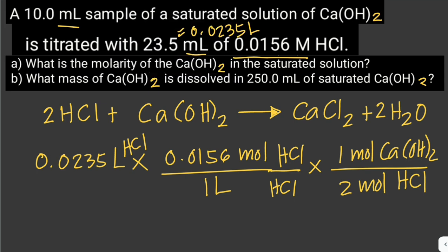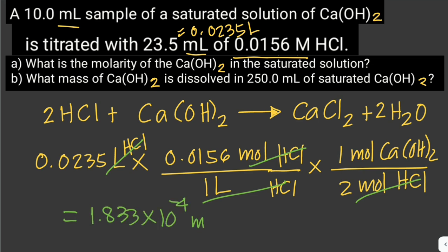We cancel out the units — the liters and the moles of HCl cancel out. Now we can solve for the number of moles of calcium hydroxide: 0.0235 times 0.0156 divided by 2, which gives us 1.833 × 10⁻⁴ moles of calcium hydroxide.